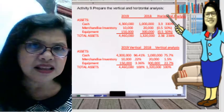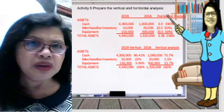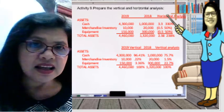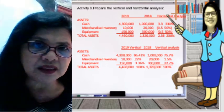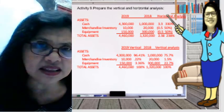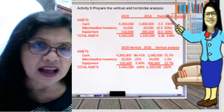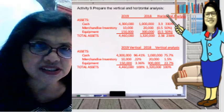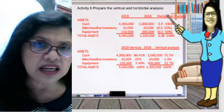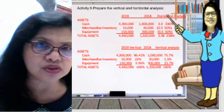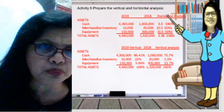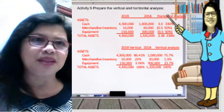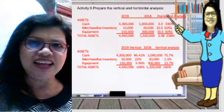For 2018's vertical analysis, the answers are: cash is 75.7%, merchandise inventory is 1.5%, equipment is 22.7%, totaling 100%.